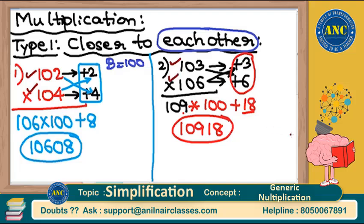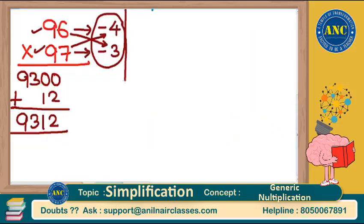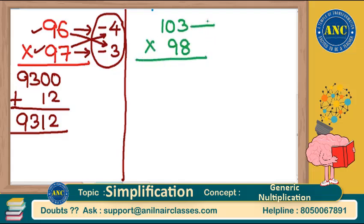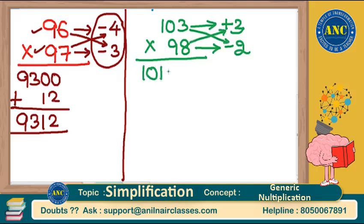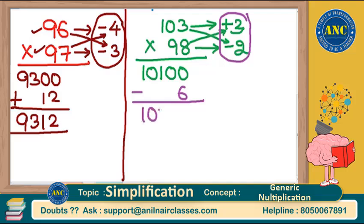There is also a case where one number is greater than 100 and the other is less. For example, 103 into 98. 103 is 3 more than 100, 98 is 2 less than 100. Cross: 103 minus 2 is 101. 101 into 100 is 10100. Then 3 into minus 2 is minus 6. Answer is 10094.